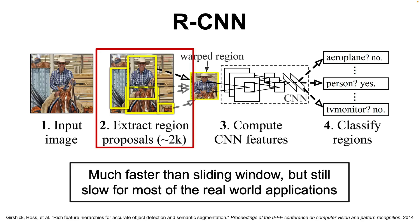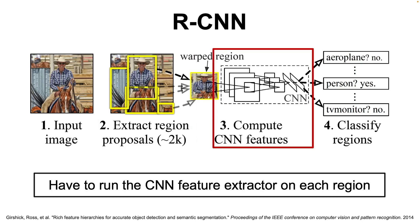To recap, even though R-CNN improves the computation time of the sliding window algorithm by using a region proposal algorithm, we still have to run the CNN feature extractor on 2000 regions, which made the R-CNN model quite expensive to train and run for inference.